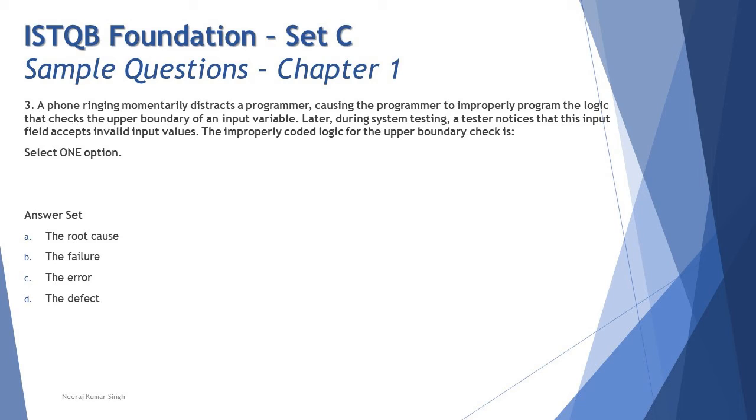Improperly coded logic for the upper boundary check is called as: is it A the root cause, B the failure, C the error, or D the defect? Here very straightforward thing to understand. The problem is in the code and it is a defect. You found this, as you found it, it is a defect. If the developer was trying to analyze this defect, that's where we call it as an error. If you experience performing some execution like a real-time scenario just like a user, you call it as a failure. But this is not even that. So the right answer here is D: the defect.